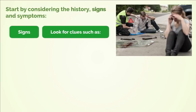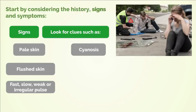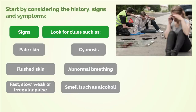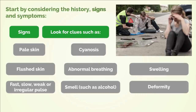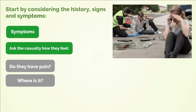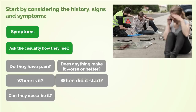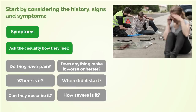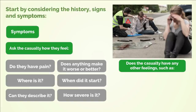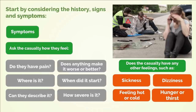Signs — look for clues such as: pale skin, cyanosis, flushed skin, fast, slow, weak or irregular pulse, abnormal breathing, smell such as alcohol, swelling, and deformity. Symptoms — ask the casualty how they feel. Do they have pain? Where is it? Can they describe it? Does anything make it worse or better? When did it start? How severe is it? Does the casualty have any other feelings, such as sickness, dizziness, feeling hot or cold, hunger or thirst?